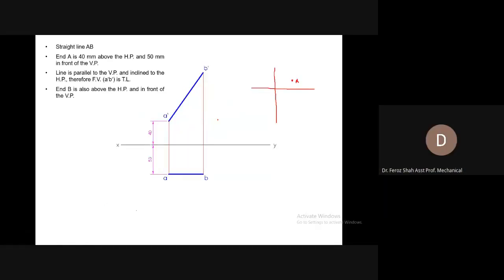So, for the front view: end A is 40mm above the HP — the XY reference line — and 50mm in front of the VP. As you already know, if a point is in front of the VP, its top view will be rotated below the XY reference line. It is 50mm in front of the VP, so its top view will go 50mm below the XY reference line. The front view must be in alignment with the top view.